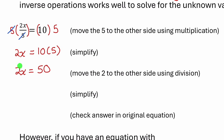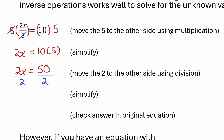Now I just have to move this 2 to the other side of the equation by doing the opposite of multiplying by 2. The opposite of multiplying by 2 is dividing by 2. As long as I do that to both sides, the equation stays balanced. On the left, I have a 2 divided by 2 — 2 divided by 2 is 1, so I can cancel those 2s out.